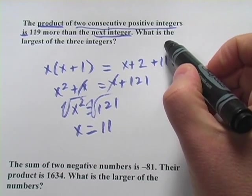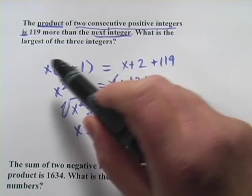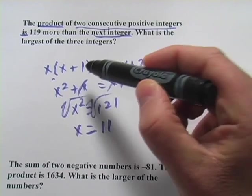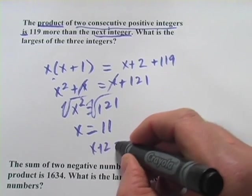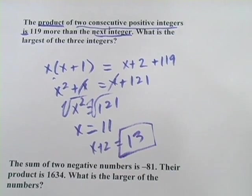But I'm not done, because the question was, what is the largest of the three integers? I solved for x. That's the smallest. x plus 1 would be 12. x plus 2 would be 13. And that is our correct answer.